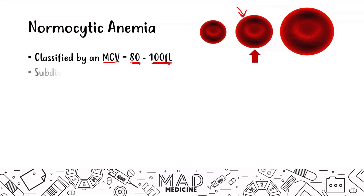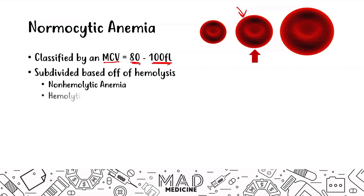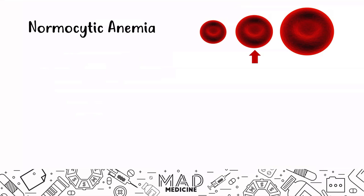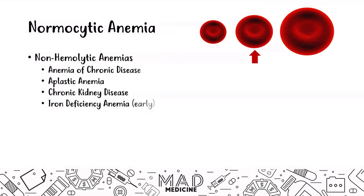Normocytic anemia can be subdivided based on hemolysis and non-hemolysis. Hemolysis can be further subdivided based on intrinsic and extrinsic causes. In this video, we are talking about a non-hemolytic anemia — anemia of chronic disease. Over the next several videos, we are going to be covering non-hemolytic anemias.